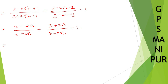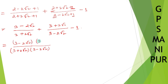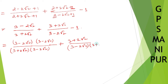To rationalize, multiply the first fraction's numerator and denominator by (3 minus 2√2), and the second fraction's numerator and denominator by (3 plus 2√2), minus 1 kept separately.